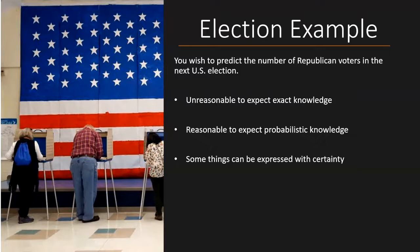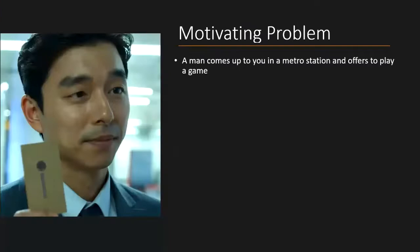And there are even some things you can say with certainty. For instance, you can be certain that the number of Republican voters will not exceed 330 million, because that is the population of the country. And this is exactly the kind of scenario where a random variable is useful. When there's no way you know the exact number, but you have some sort of feeling of where it will end up.